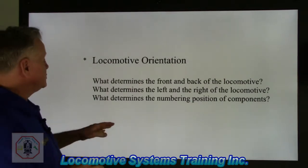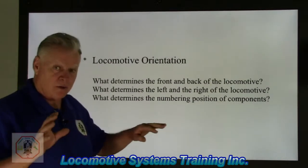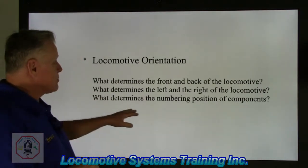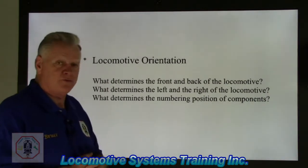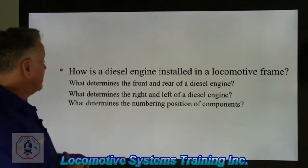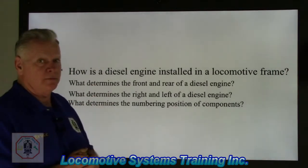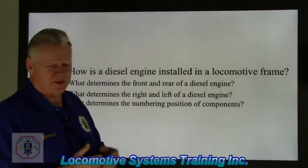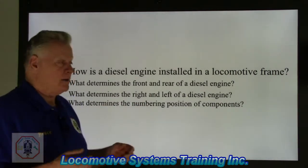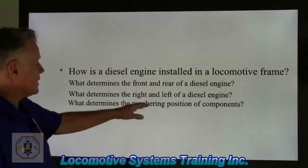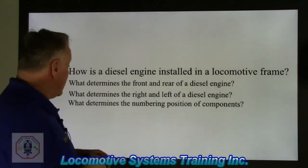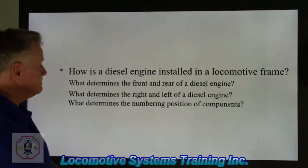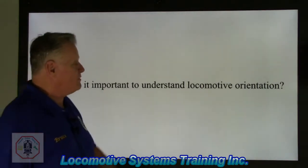Okay, Locomotive Orientation. What determines the front and back of a locomotive? We're going to talk about that. What determines the left and right side of the locomotive? We're going to talk about that. And what determines the number and position of components? Very, very important. How is the diesel engine installed in a locomotive frame? What determines the front and rear of the diesel engine — is it the same as the front of the locomotive? What determines the right and left of the diesel engine? And what determines the number and position of the components? Also, why is it important to understand locomotive orientation?